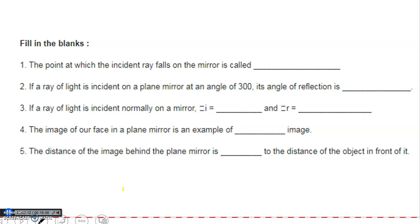Fifth question: the distance of the image behind the plane mirror is equal to the distance of the object in front of it. When we learned the characteristics of the image formed in the plane mirror, we said that the image and the object are located at the same distance from the plane mirror.